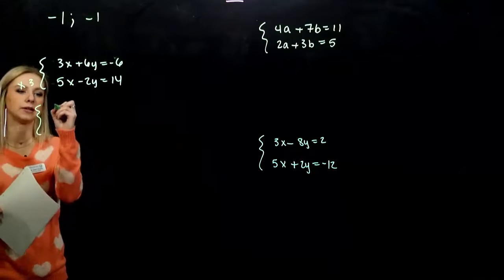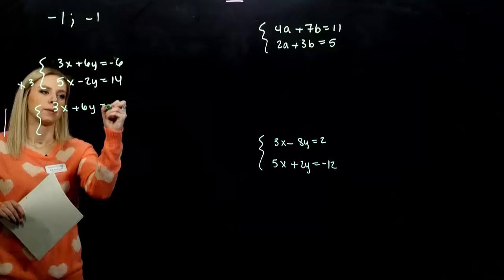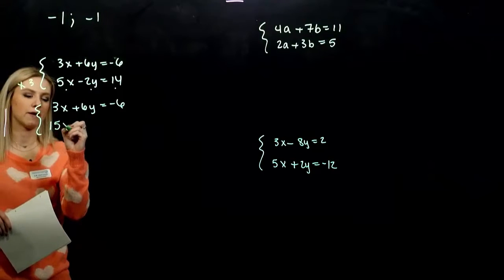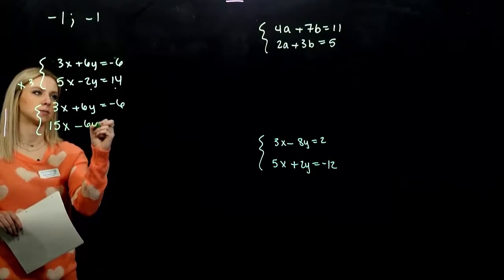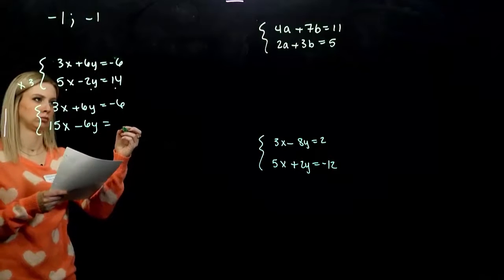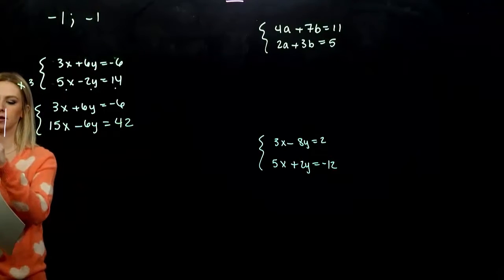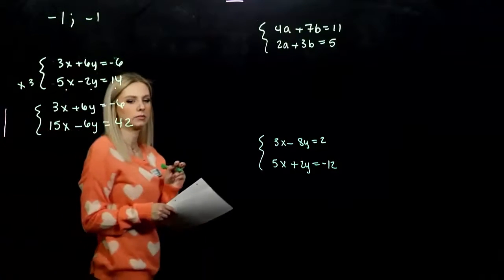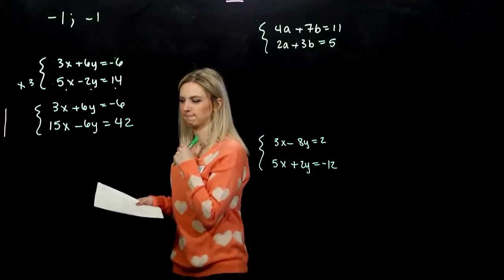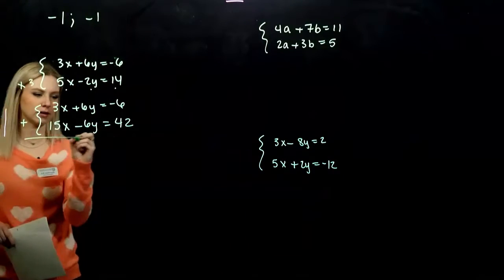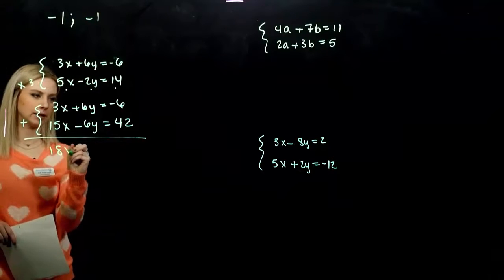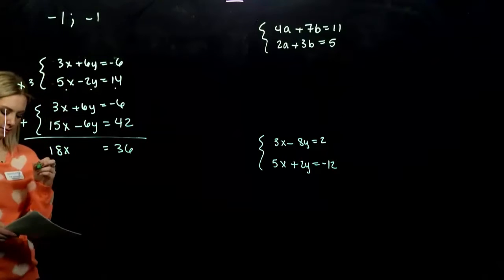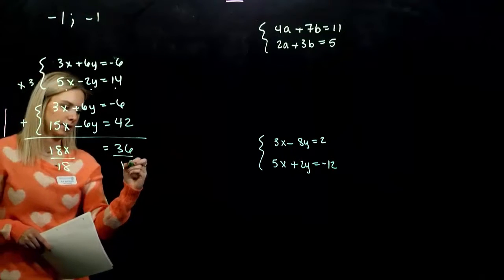So the equivalent system, I didn't change the first. But I'm multiplying every single term by three in the second equation. So we've got 15X minus 6Y is equal to 42. Now do it off on the side. 4 times 3, 12, yeah, 42. Now when we add those together, what happens? My Y's are eliminated. I've got 18X is equal to 36. If I divide by 18, X is equal to 2.